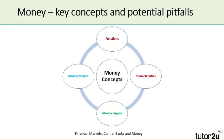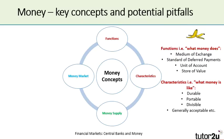Moving to money, I've grouped common errors and likely pitfalls into four areas. The first banana skin is the functions and characteristics of money. Students are finding it difficult to distinguish between the two: functions being what money does, and characteristics describing what money is like. There's a classroom activity coming up in a few minutes that you can use quite easily to help teach this topic.